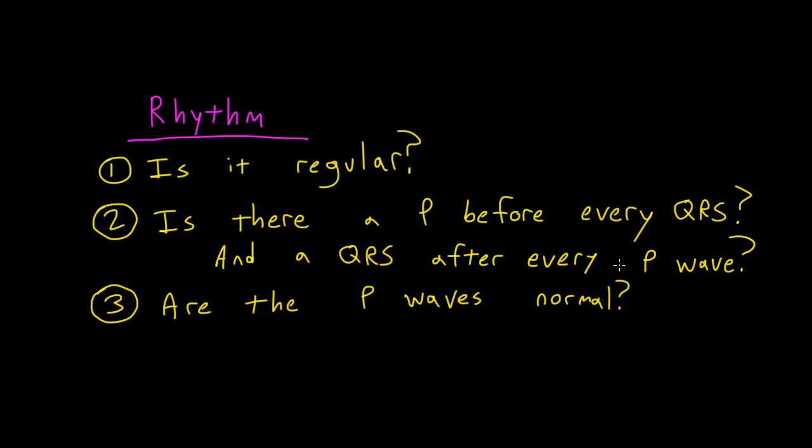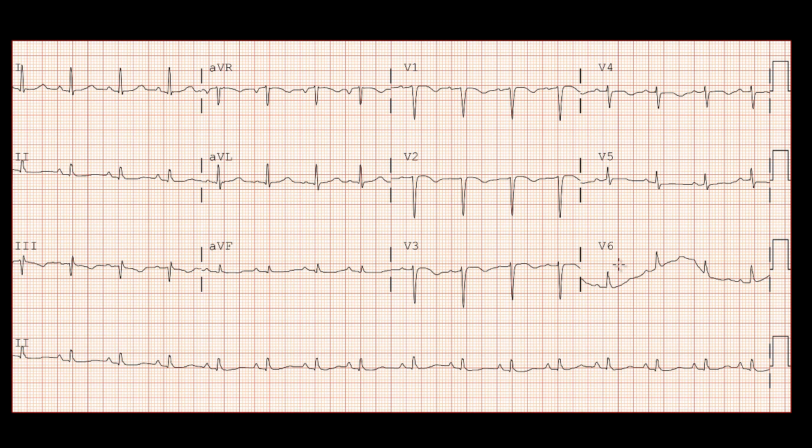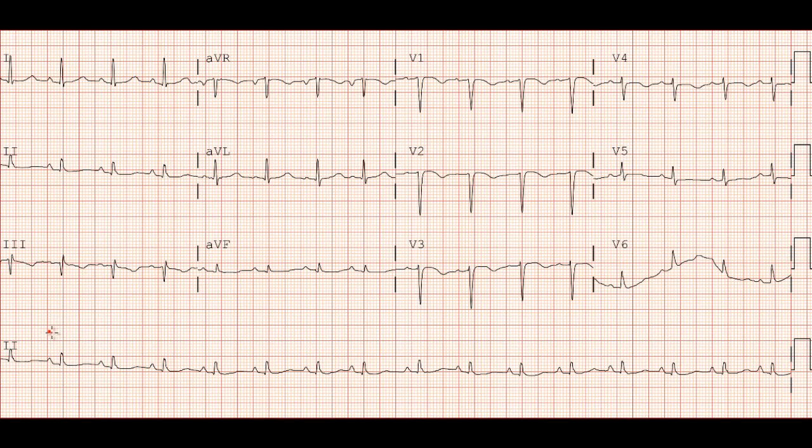So let's try it on a couple. So here we can see that it's regular. We have a consistent amount of space between consecutive QRS complexes. Similarly, we can see that there's a P wave before every QRS complex and a QRS complex after every P wave. And finally, we can see that the P waves look normal. They're upright in lead 2. Thus, here we've got normal sinus rhythm.